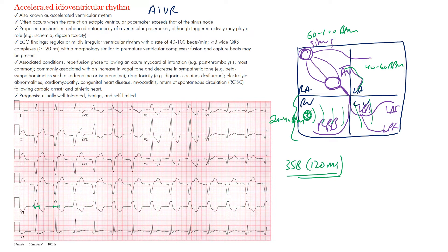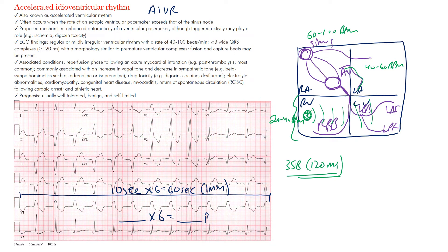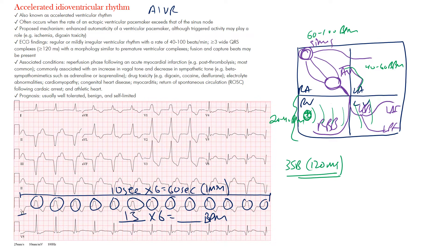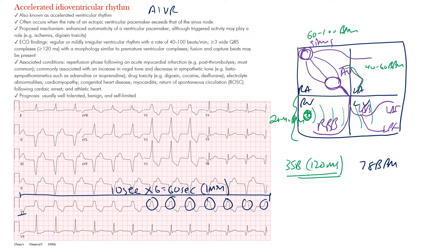To find the rate on a standard 12-lead EKG, we know the strip is 10 seconds. Multiplying by 6 gives us 60 seconds, so counting the complexes and multiplying by 6 gives beats per minute. Counting here: 1, 2, 3, 4, 5, 6, 7, 8, 9, 10, 11, 12, maybe 13 — 13 times 6 is about 78 beats per minute.